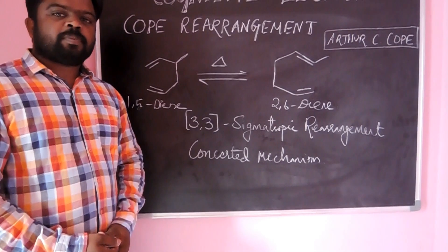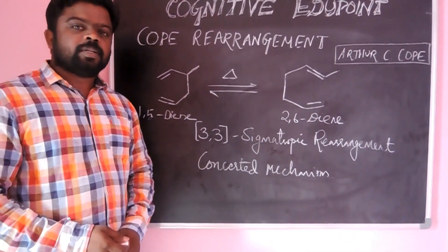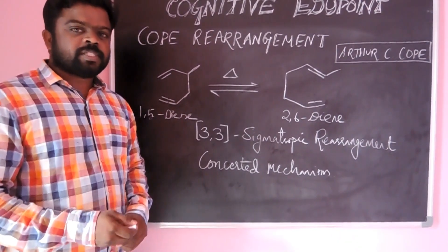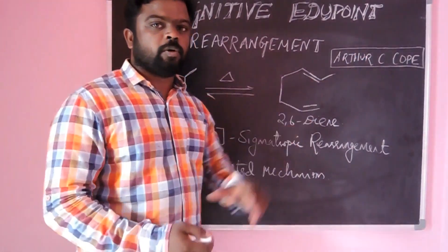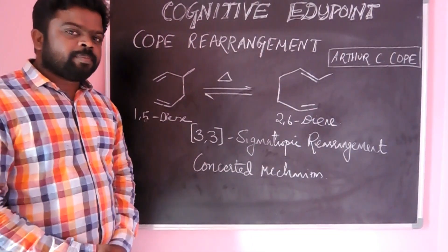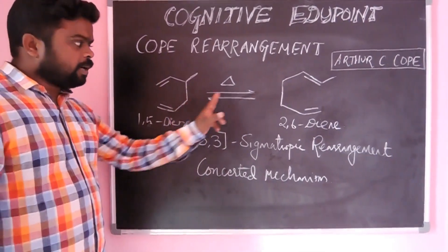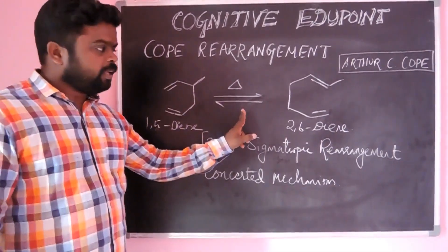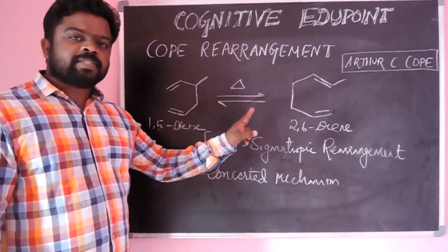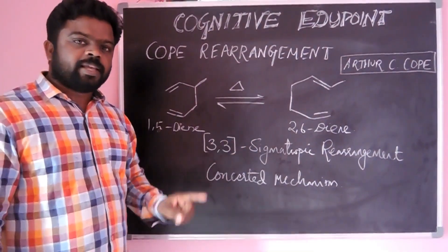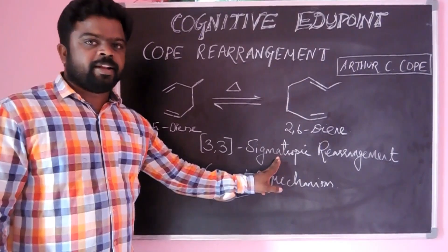Hello friends. As part of Cognitive Edgepoint online learning program, today we are going to discuss Cope rearrangement by Arthur C. Cope. Cope rearrangement is nothing but the 1,5-diene. Upon heating, it gives 2,6-diene. Since this is a pericyclic reaction, specifically a 3,3 sigmatropic rearrangement.